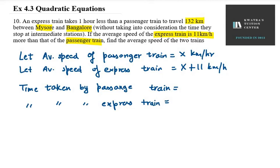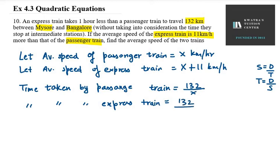Our formula is: speed equals distance over time, so time equals distance over speed. Distance is 132 km. So the passenger train travels at speed x, and the express train travels the same distance at speed x plus 11.